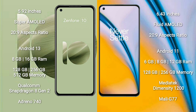The OnePlus Nord 2 comes with 6GB, 8GB, or 12GB of RAM and is powered by the MediaTek Dimensity 1200 processor with a Mali-G77 GPU.